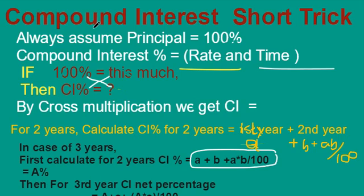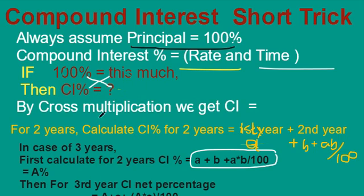While solving compound interest problems, always we have to assume the principal amount equal to 100%, and compound interest is calculated based on the rate and time. After that, we have to use this logic: if 100% is this much, then what is the compound interest percent? By cross multiplication, we get the compound interest.